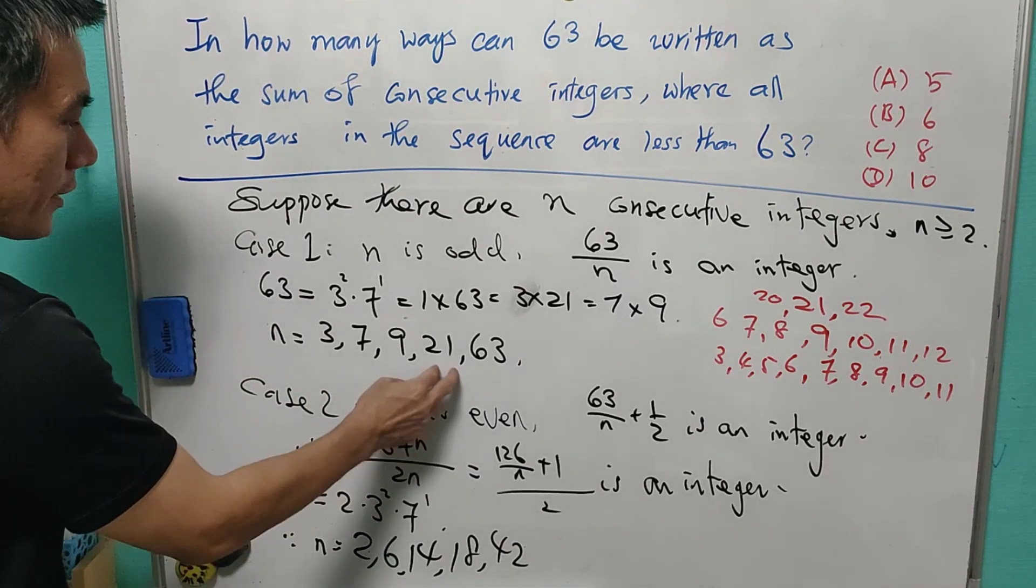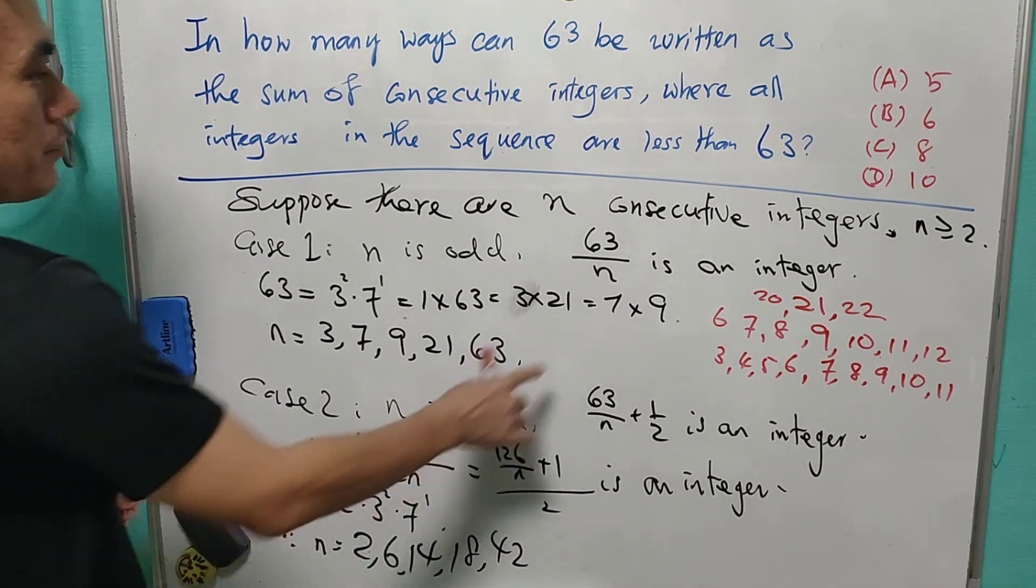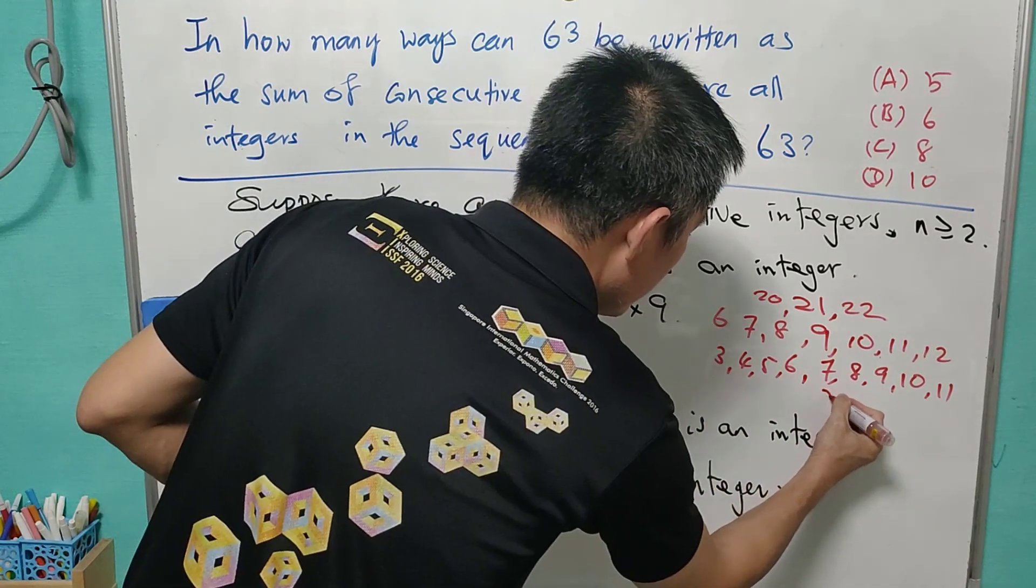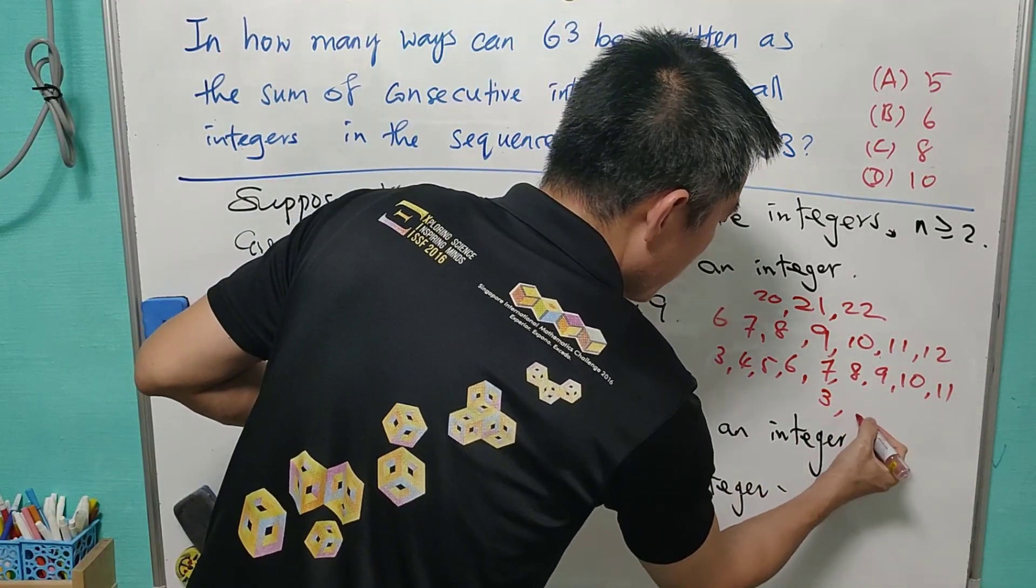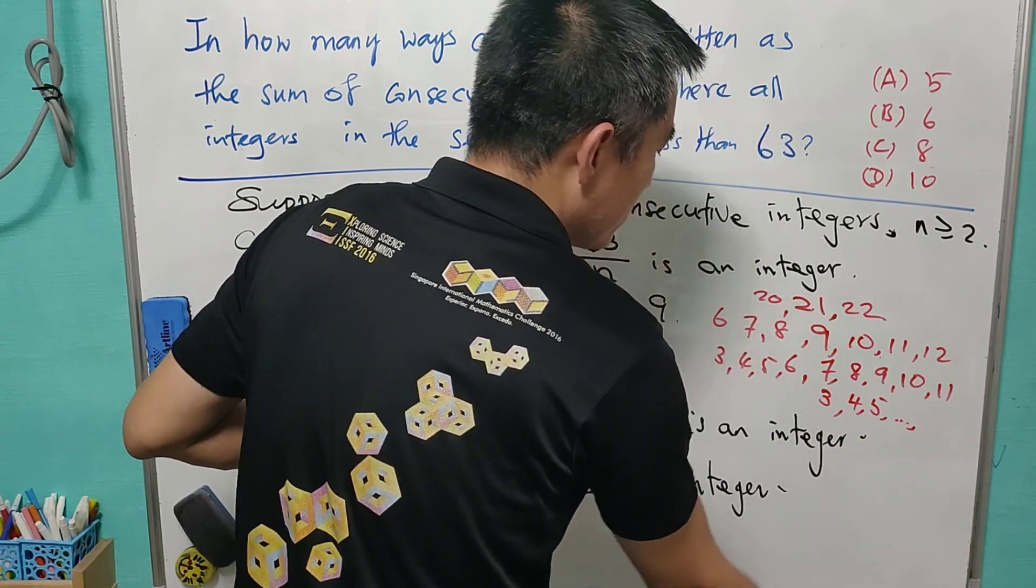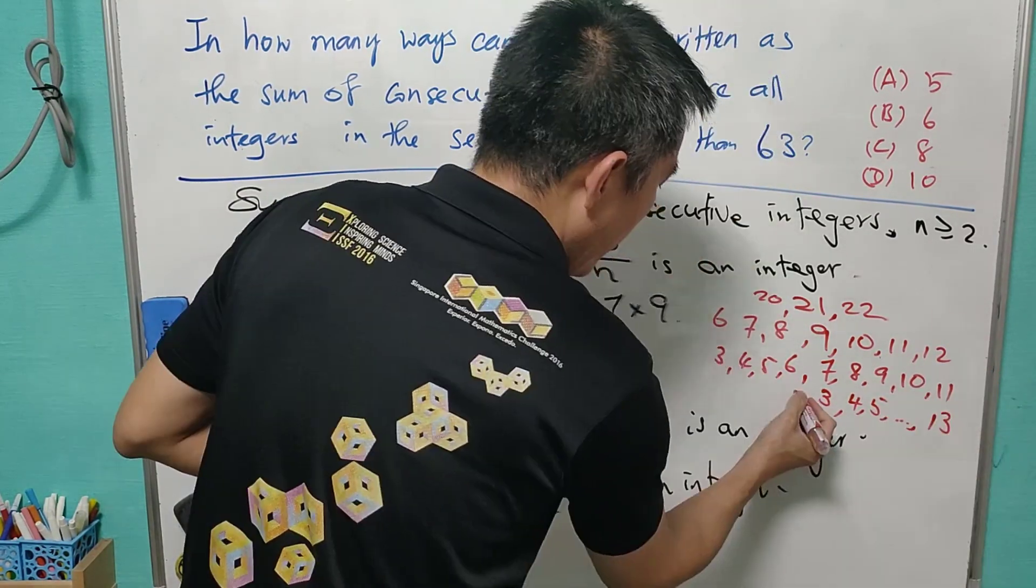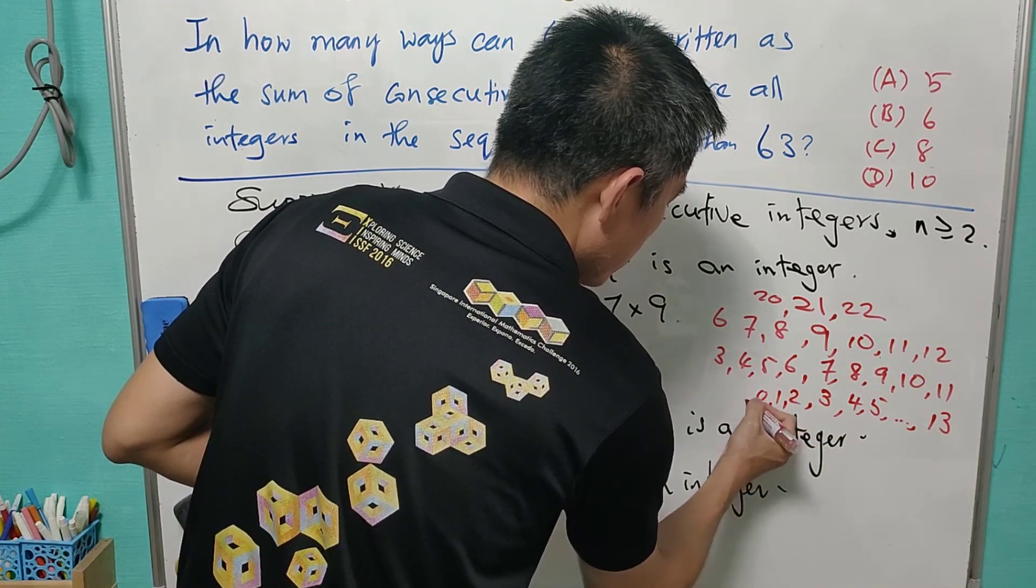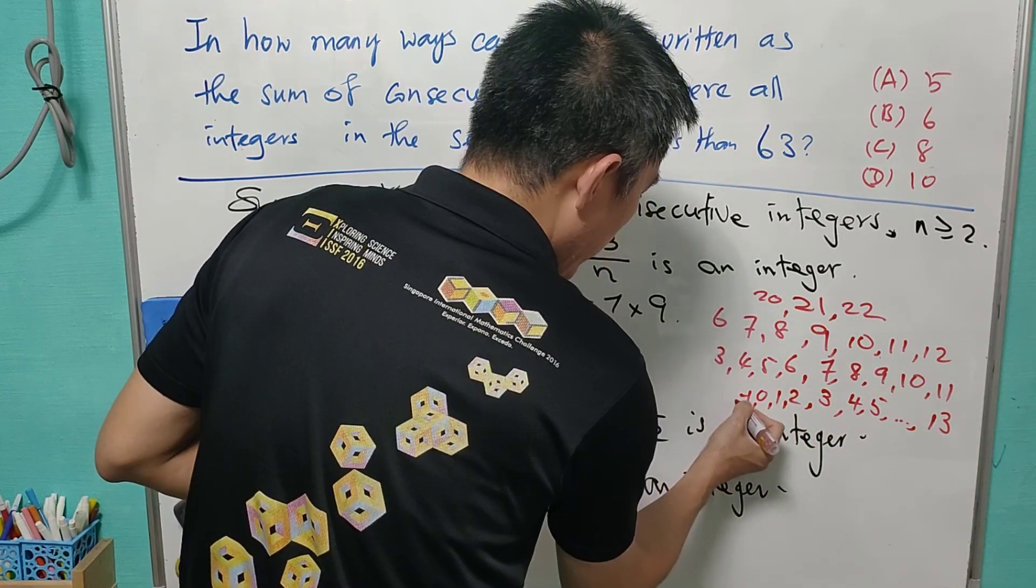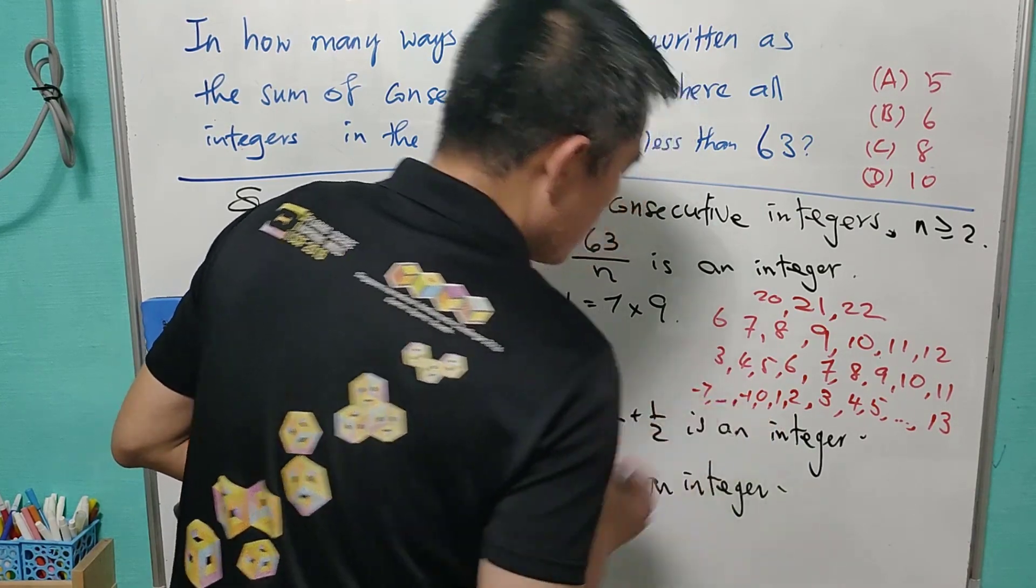Now, it's more interesting when n equals to 21. Because when n equals to 21, this is 3. And we need to have 10 numbers here: 4, 5, all the way to 13. And here will be 2, 1, 0, negative 1, all the way to negative 7.